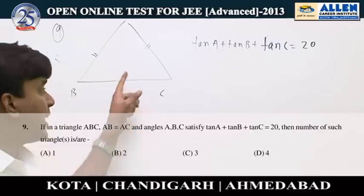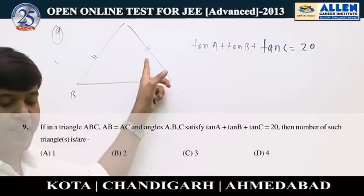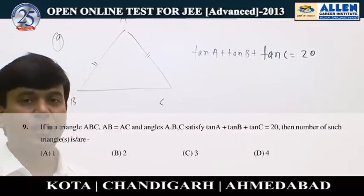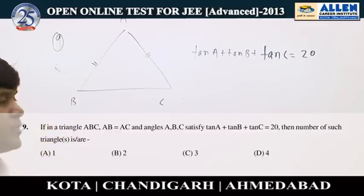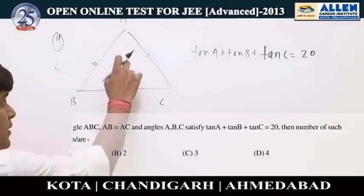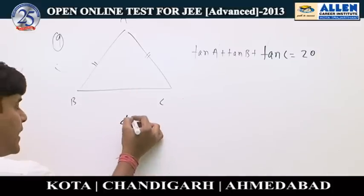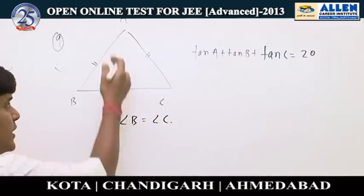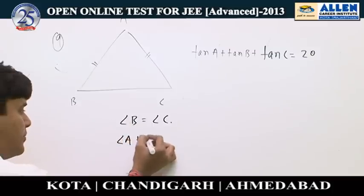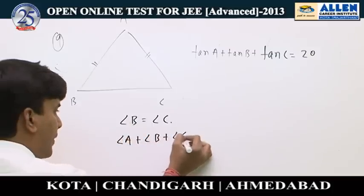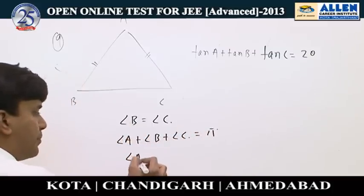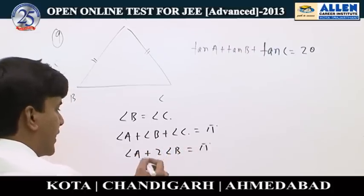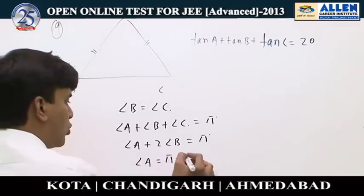In question number 9, we have a triangle ABC in which AB equals AC and the angles satisfy the equation tanA plus tanB plus tanC equal to 20. We have to find the number of such triangles. Since the triangle is isosceles, angle B equals angle C. Since A plus B plus C equals pi, we get angle A equals pi minus 2B.